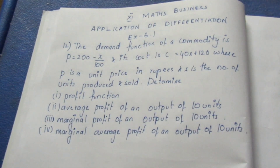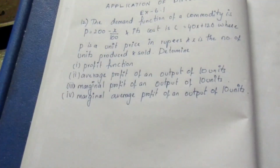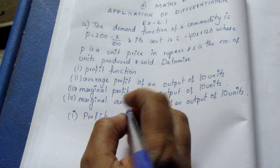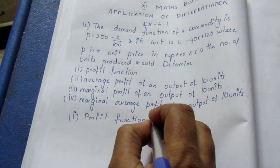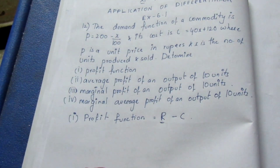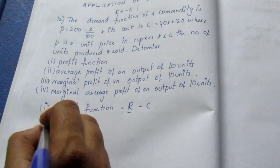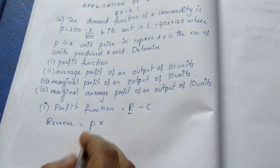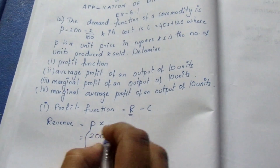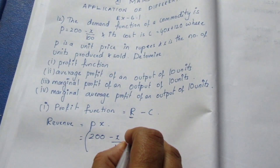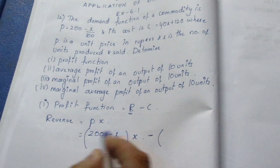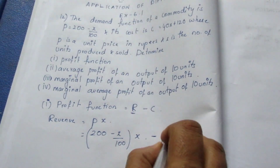First, we will find the profit function. Profit equals revenue minus cost. Revenue is P into x, so profit is P into x minus cost. That is 200 minus x by 100, into x, minus cost which is 40x plus 120.